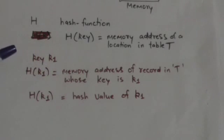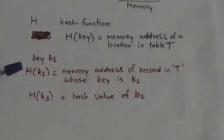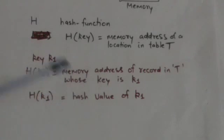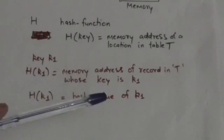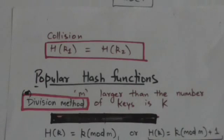Suppose we have to access a record in table T whose key is K1. Then we will apply the hash function on this key K1, and we will get the memory address of the record in table T whose key is K1. The value which we get after applying the hash function on key K1 is called the hash value of key K1.